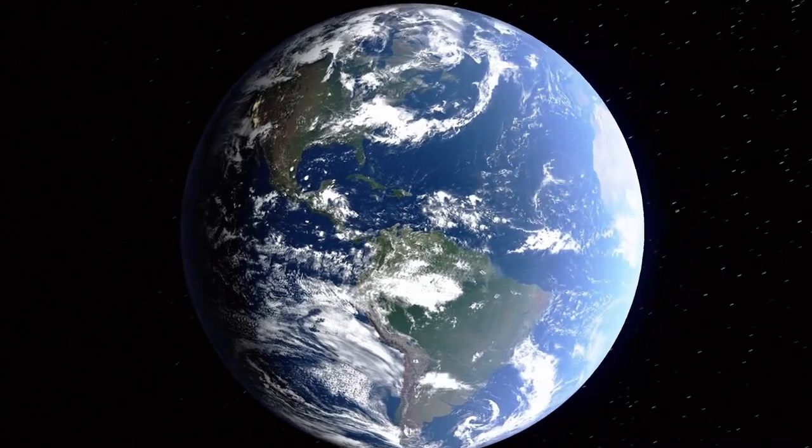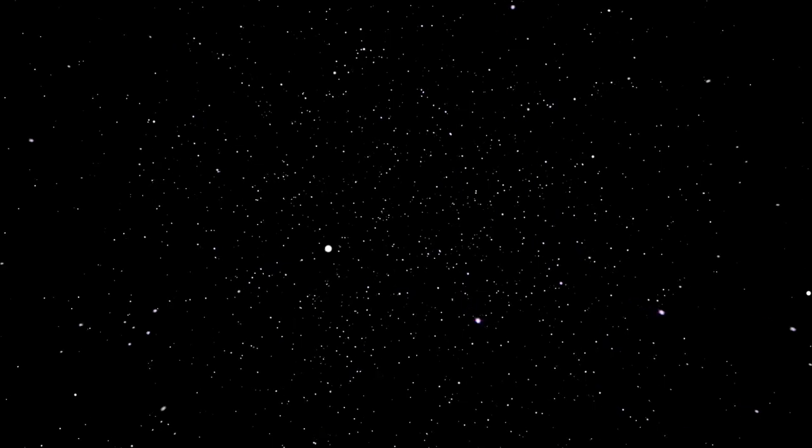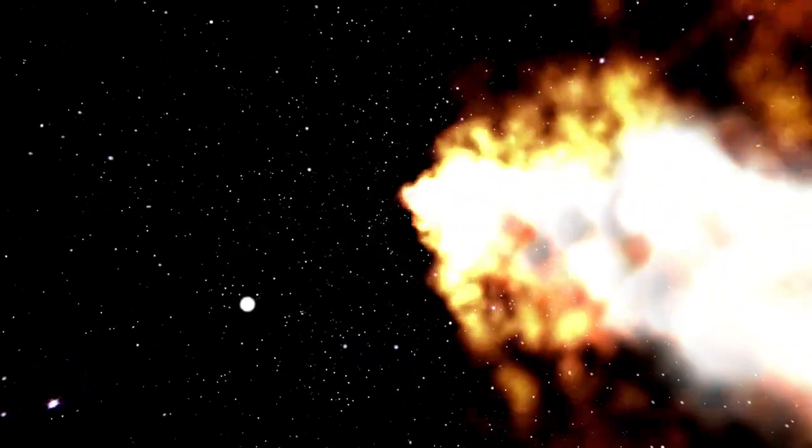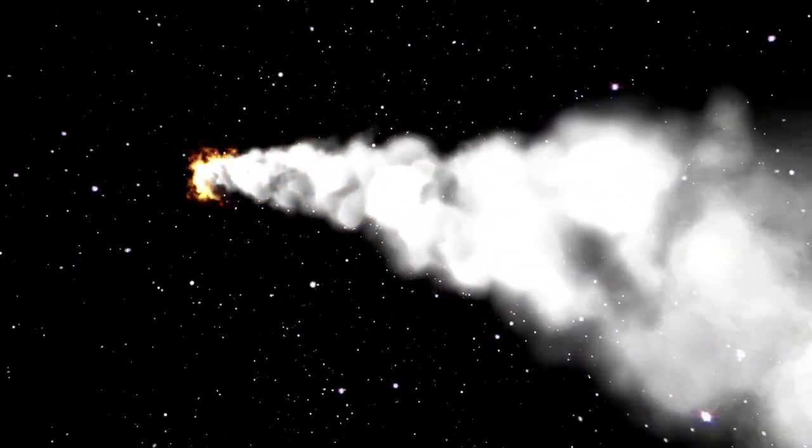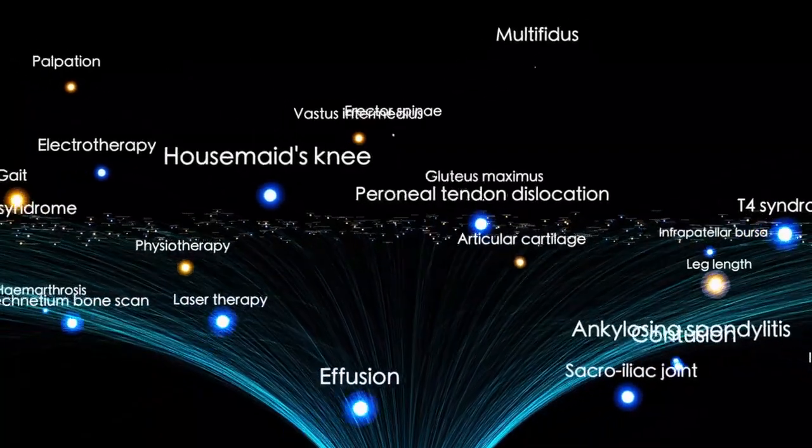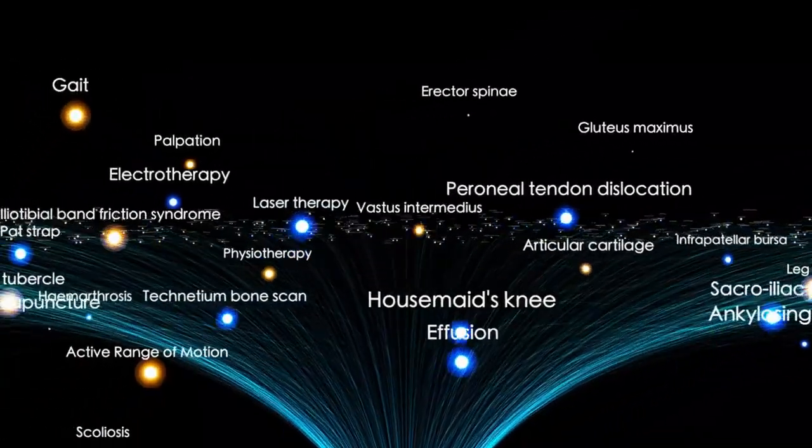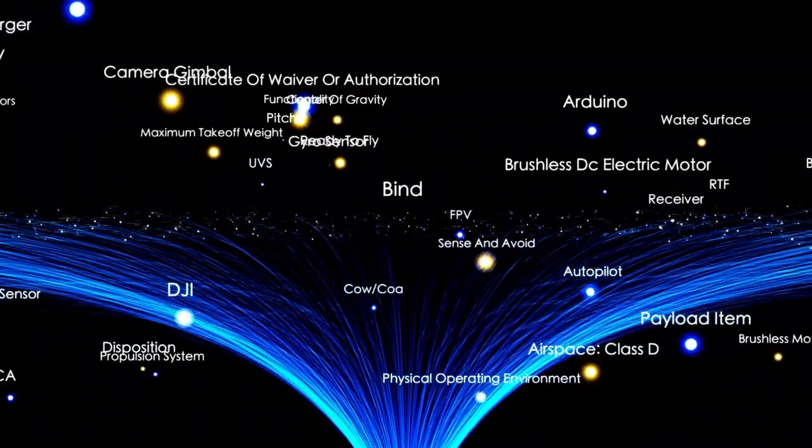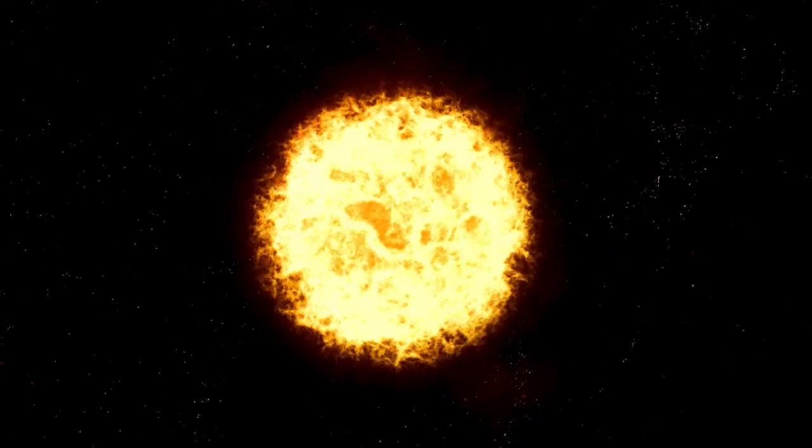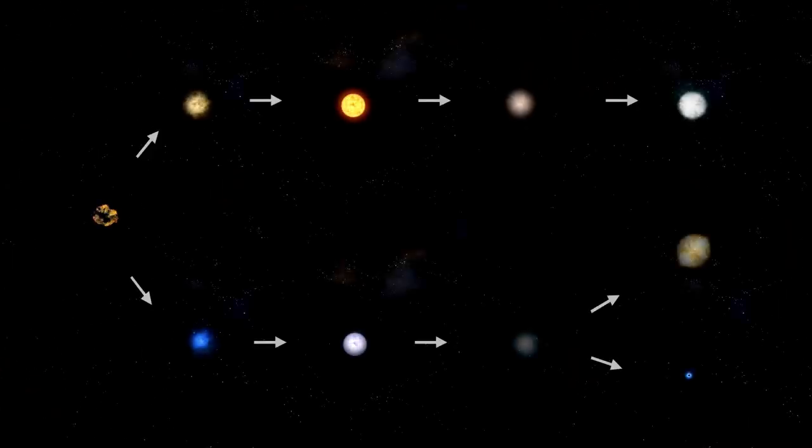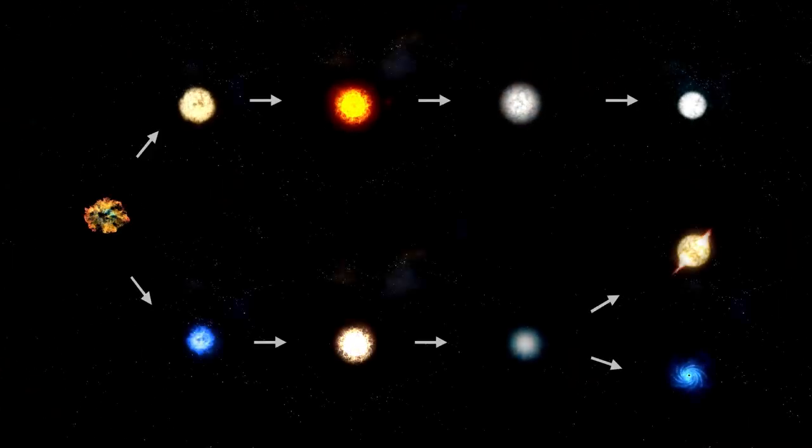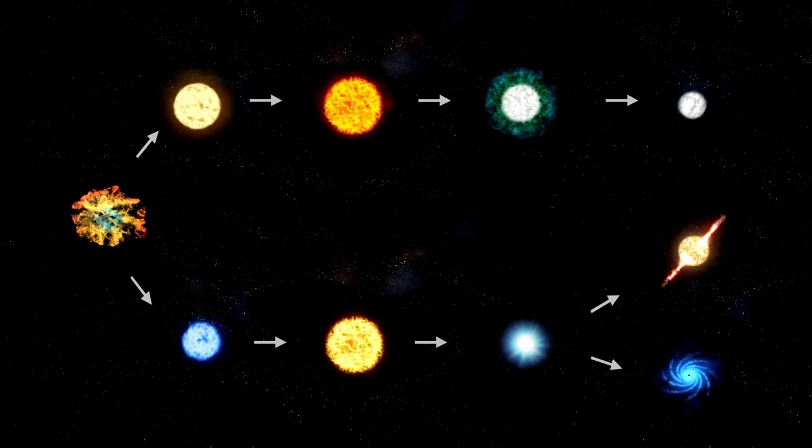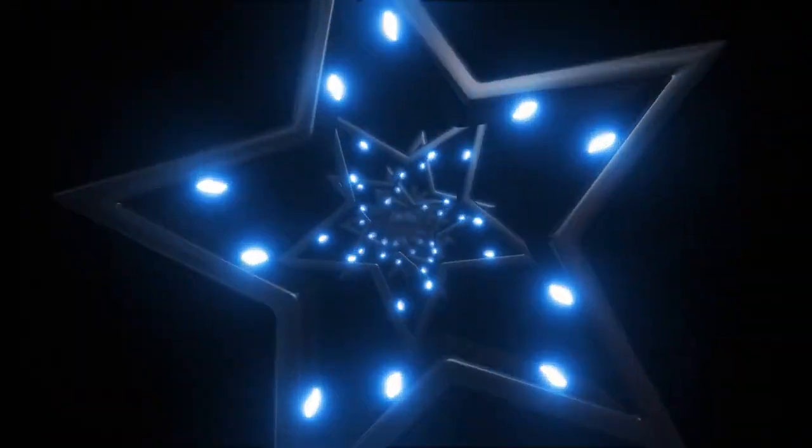Still, it's important to approach this with cautious excitement. The increase in brightness doesn't guarantee an imminent supernova. Red supergiants are infamous for unpredictable behavior, and this could be another phase in Betelgeuse's long and chaotic life. But the scale of this change, 250% brighter in such a short time, is certainly not ordinary, suggesting that something noteworthy is unfolding inside the star.